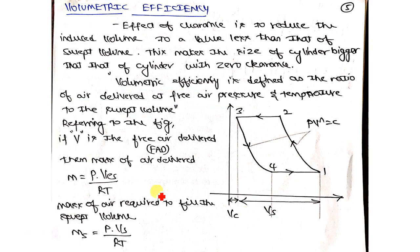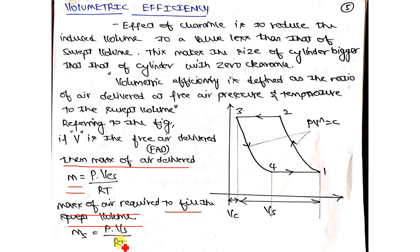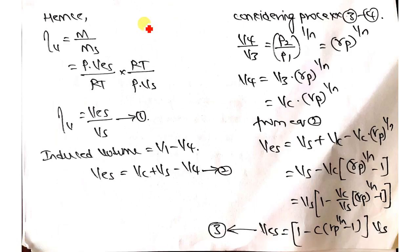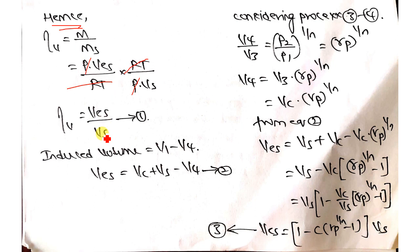The mass of air delivered is given as P·Ves divided by RT. So the volumetric efficiency is defined as the quantity of air delivered at free air pressure divided by the swept volume quantity. When you substitute and simplify, RT and P cancel out, leaving Ves divided by Vs — that is, the exact swept volume divided by the swept volume. This ratio is your volumetric efficiency.